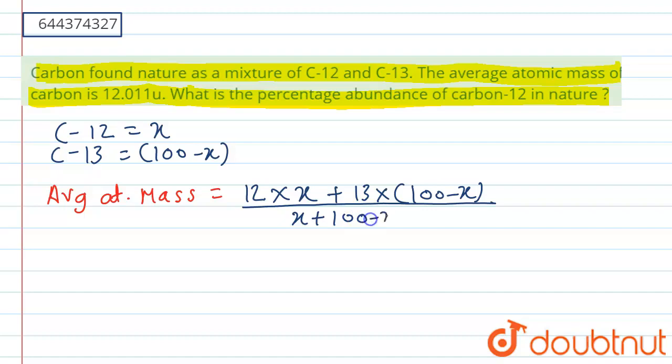Which equals 12x plus 1300 minus 13x, divided by 100. So 12.011 equals (12x plus 1300 minus 13x) divided by 100.